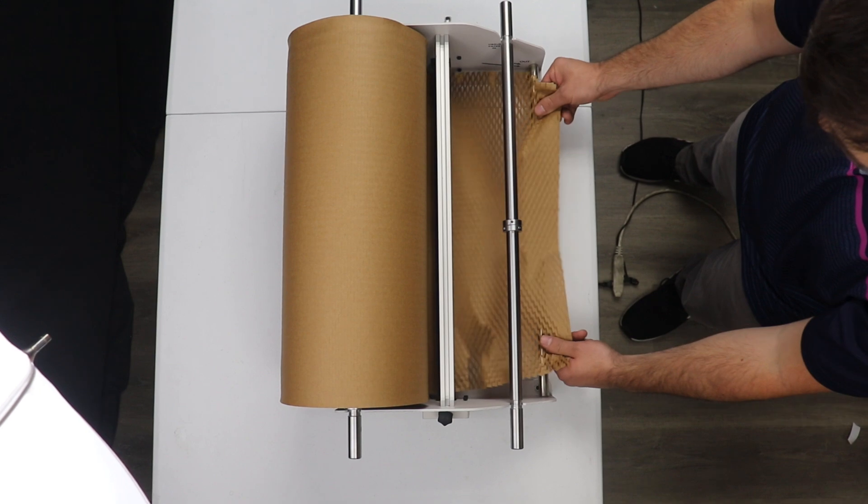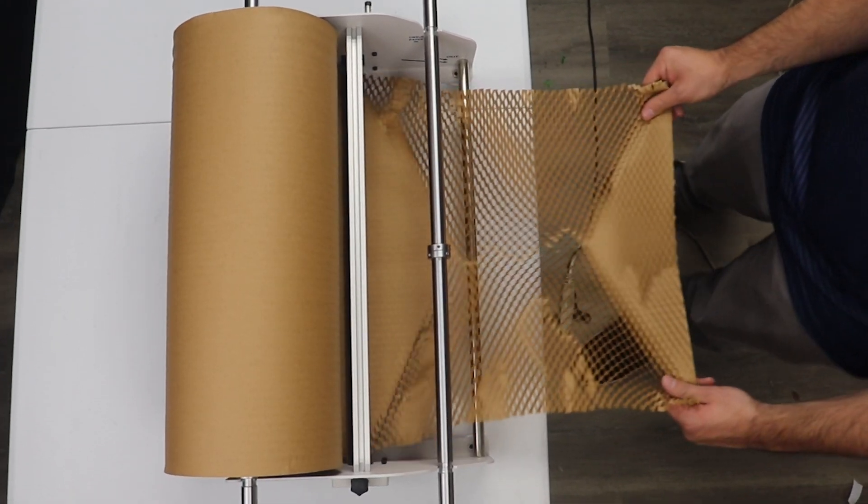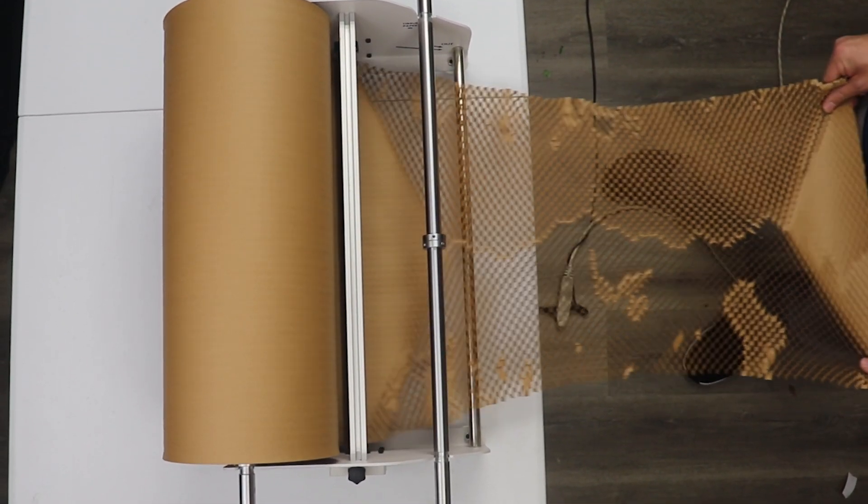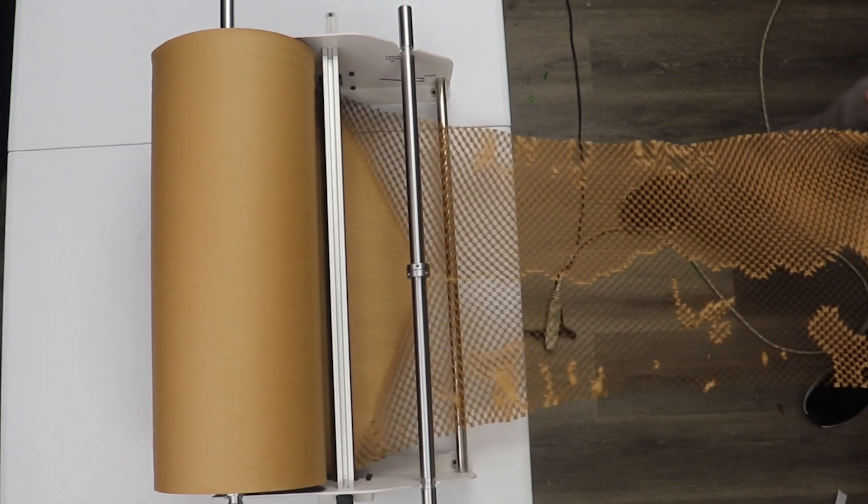Now you should be set up to start wrapping. Test your tension by pulling the paper with your hands. You should see the honeycombs as the paper expands.